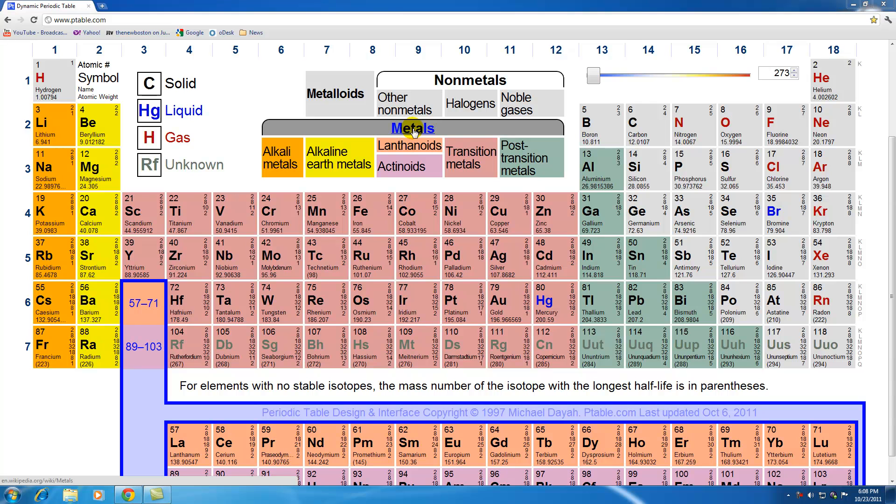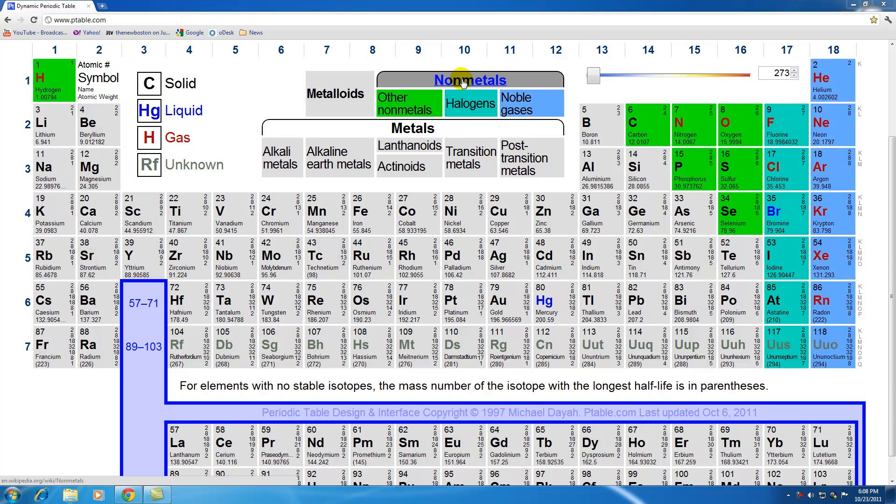So then we can go ahead and look at non-metals. Go ahead and hover over that. Now the non-metals are in the top right hand side of the periodic table and these pretty much have the opposite properties of metals. They're poor conductors of electricity, they're brittle, some of these are even gases, those kind of light blue ones.